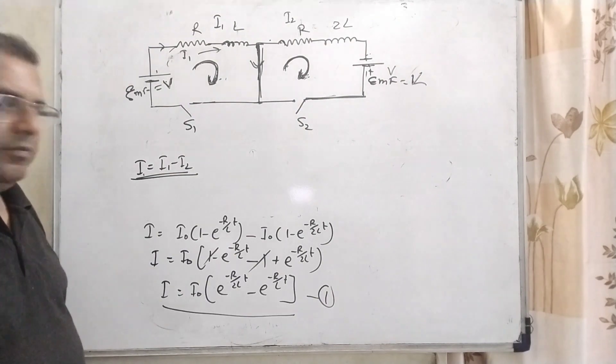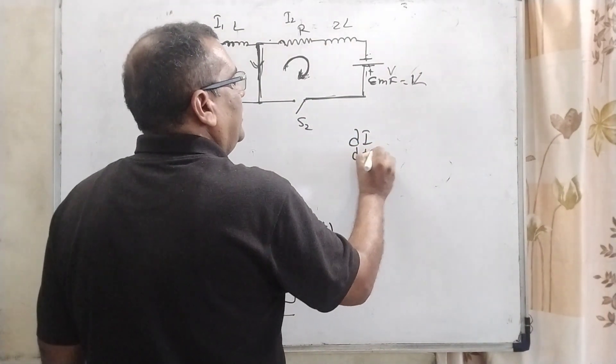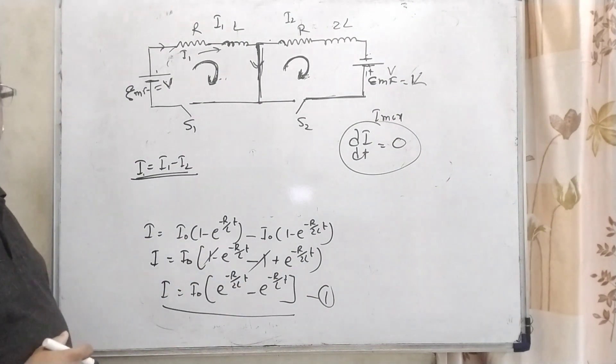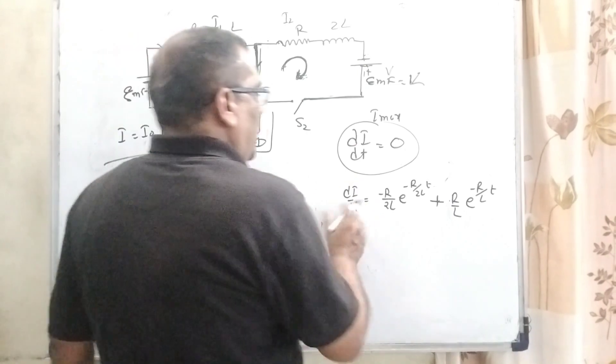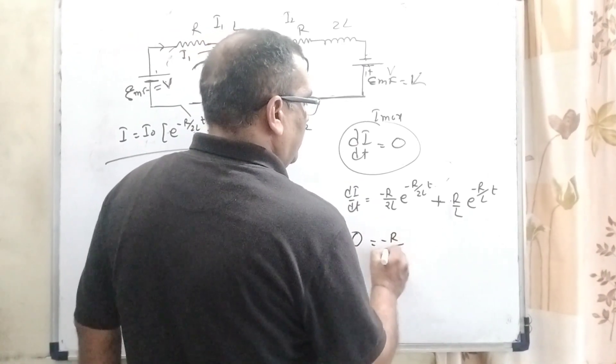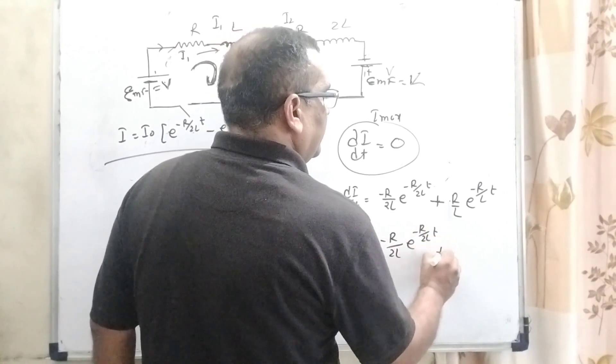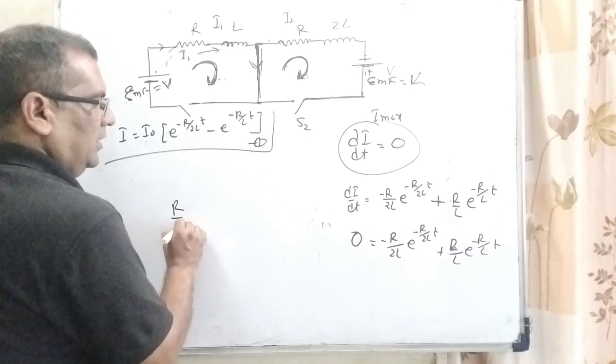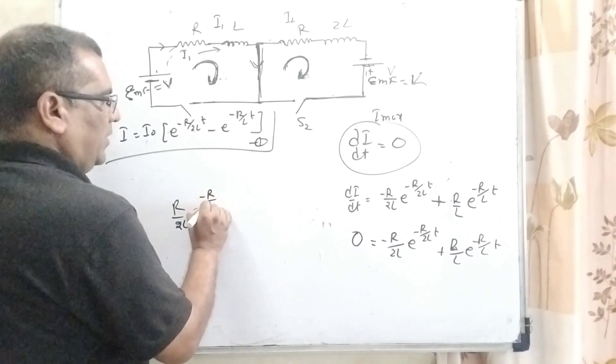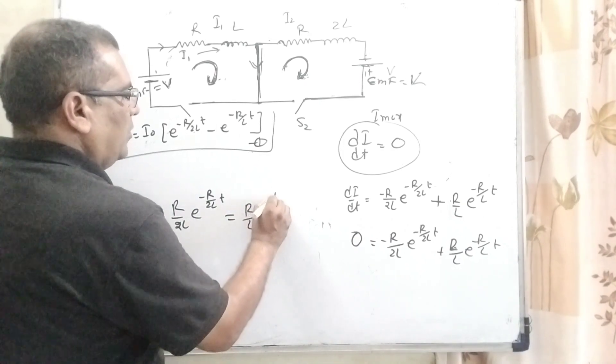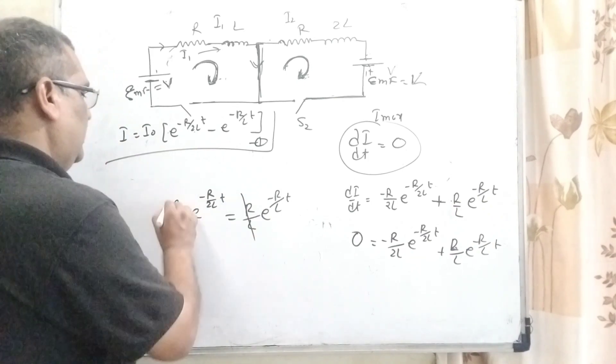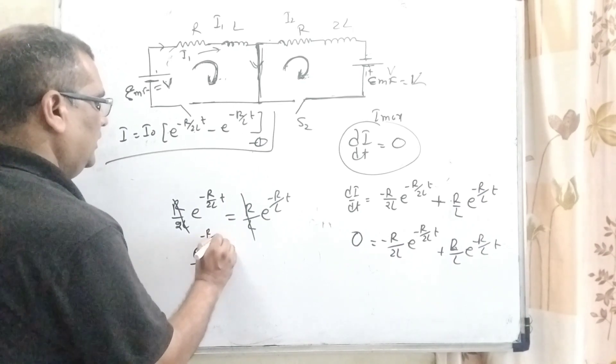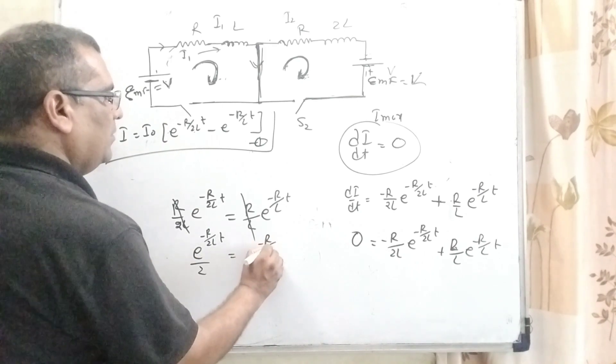Here we have to find out I maximum. For I maximum, we know that dI by dt for I maximum that time dI by dt equal to 0. Therefore, we have to differentiate both with respect of t. Now, dI by dt that is considered 0. Now, minus R by 2L e raised to power minus R by 2L T plus R by L e raised to power minus R by L T.